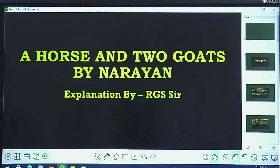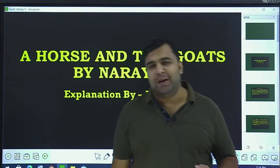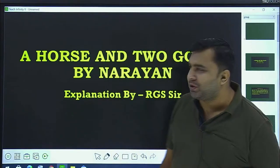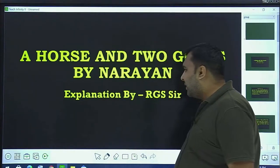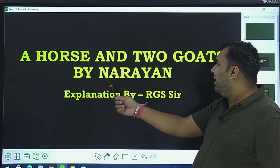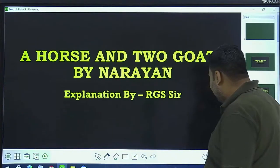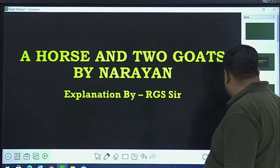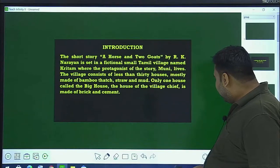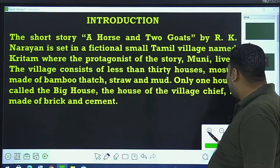Hello students, once again I want to welcome you all in our online training program that is Young Minds Academy. My name is Rutesh, I am your English coach and today I am going to start the new chapter of your treasure trove — A House and Two Goats by Narayan. The full name of Narayan is R.K. Narayan. Before starting this story, I would like to give you a short introduction.